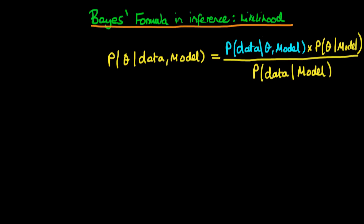In this video, I want to introduce how we can use Bayes' formula to do statistical inference. I've written out Bayes' formula here, which we've seen before. On the left-hand side, we have what we call the posterior density — the probability of certain values of our parameters, given our data and given our model choice.